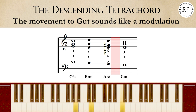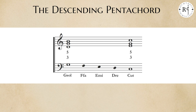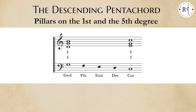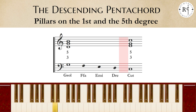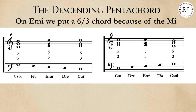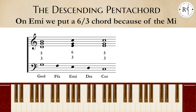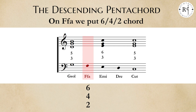With the descending pentachord, let's start by considering the pillars on the fifth and on the first degree, where we have a third and fifth chord. Then, we put the third and sixth chord on the Mi of E♭, as we have done in the descending tetrachord. On F Fa, we can put the second, fourth and sixth chord, considering this note as the seventh in the base of the chord G-B-D-F, whose resolution is on a third and sixth chord, as we already have on E Mi.